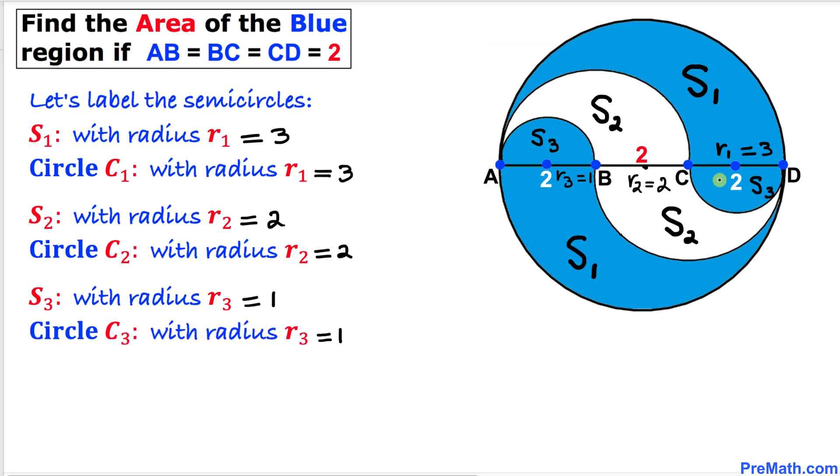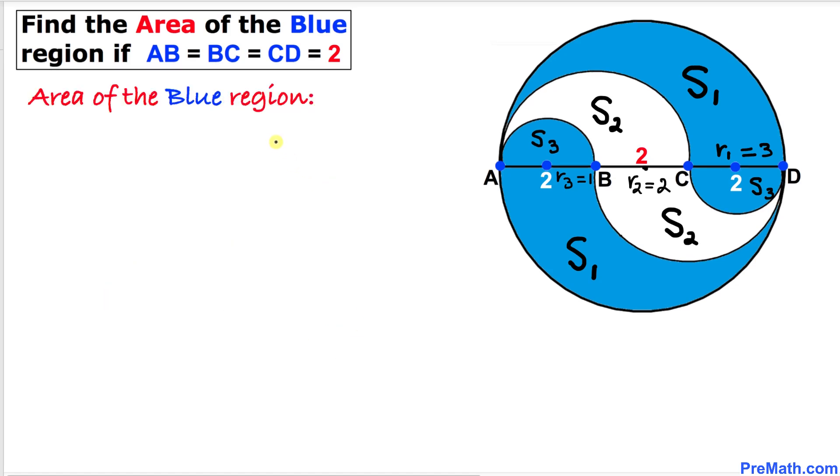If we combine these two semicircles, we get a complete circle C3 with radius R3 equal to 1. Here's our next step.